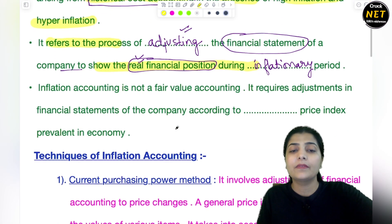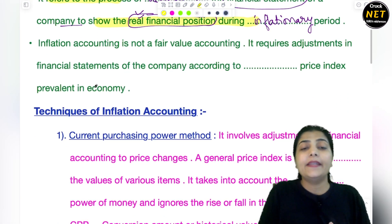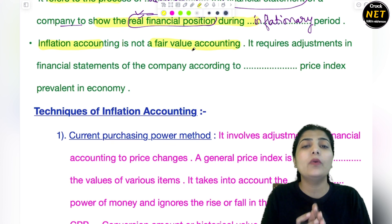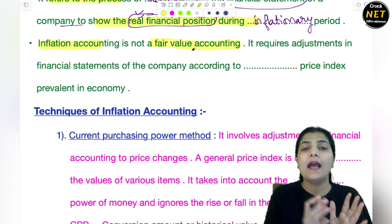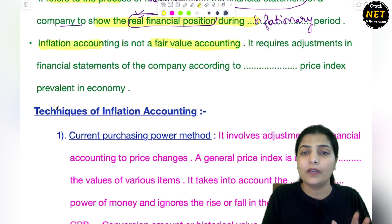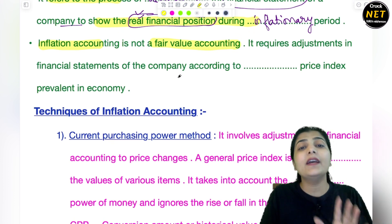Then the next thing - inflation accounting is not a fair value accounting. This is not fair value accounting. Fair value is when you check the building's price in the market, someone tells you the building is worth 40 lakhs at today's price, so when you make your balance sheet you write 40 lakhs.